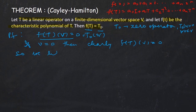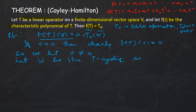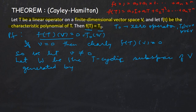We let W be the T-cyclic subspace of V generated by the vector v. T-cyclic subspaces are so important that they are used in the proof of this theorem. W is the T-cyclic subspace generated by v.